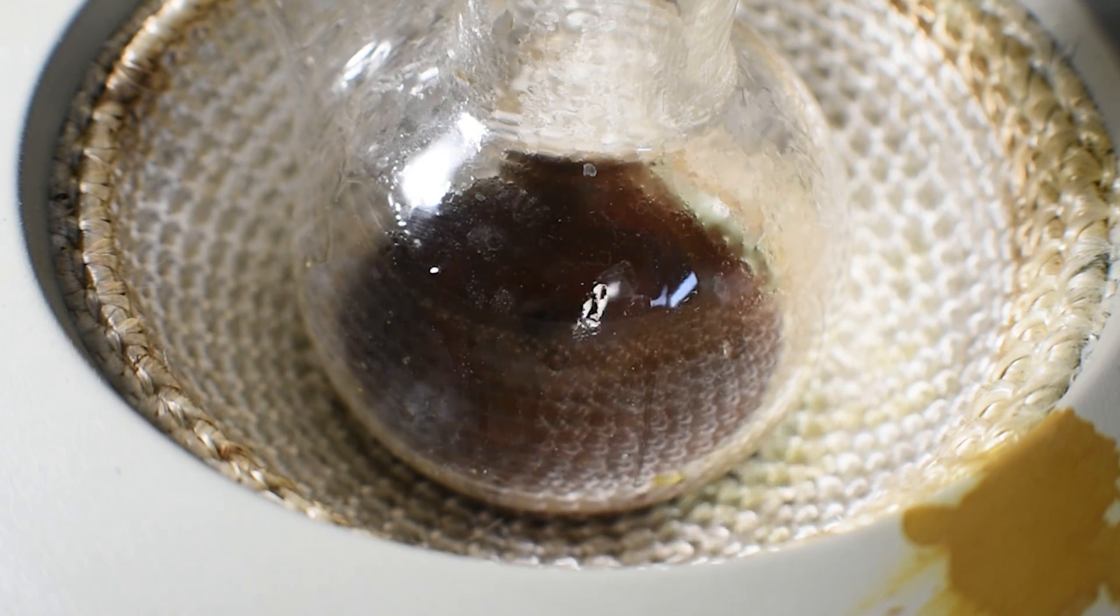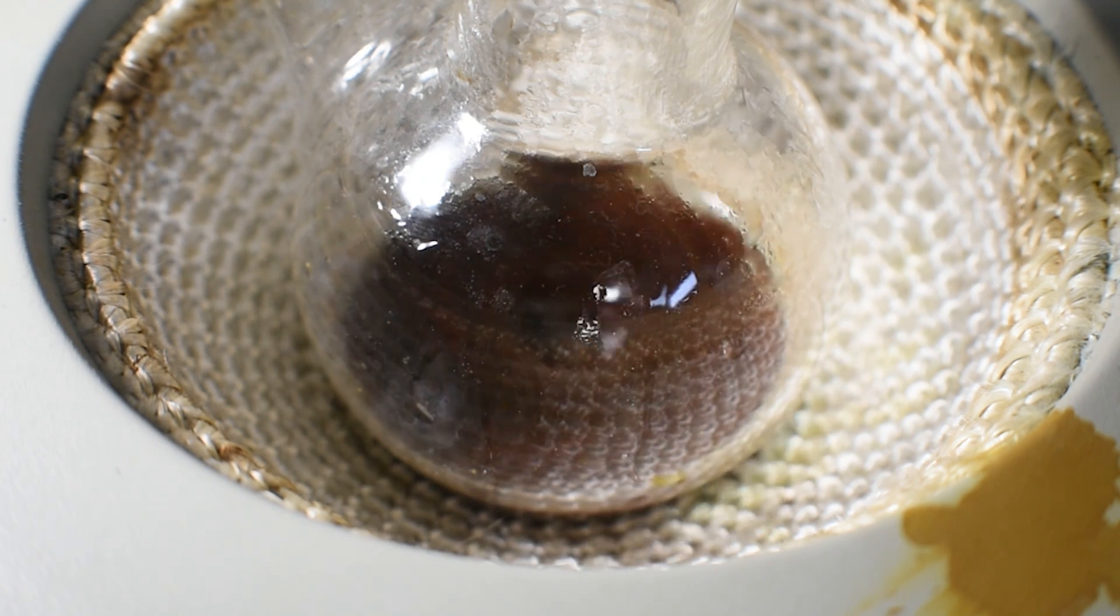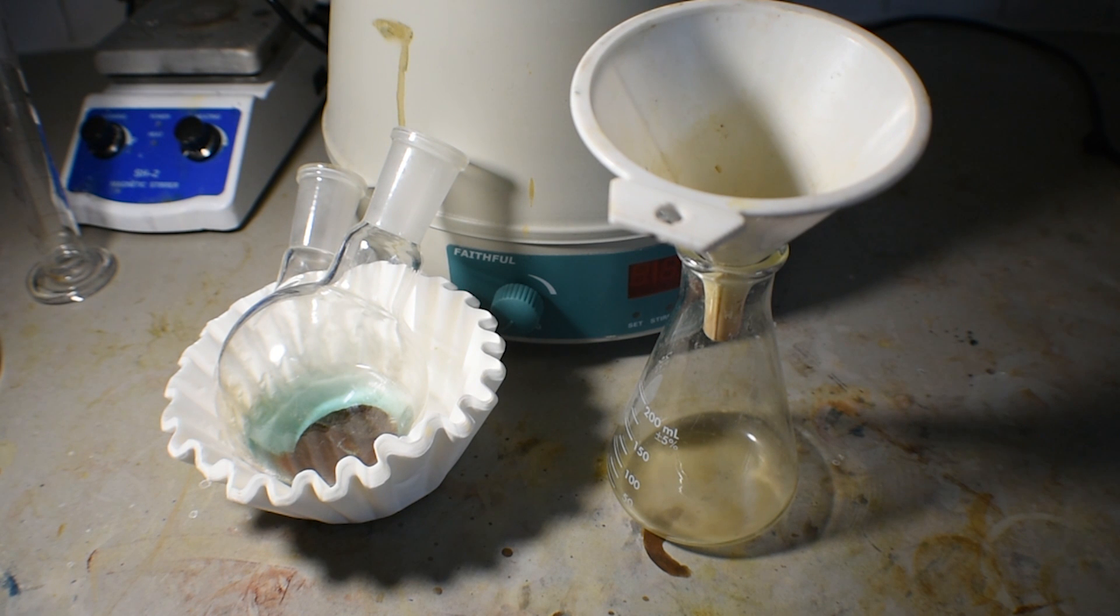Once the solution had become almost completely red in color, it was taken off heat and allowed to cool outside, so as to let any remaining sulfur dioxide escape the flask. After a few hours, it was ready to be processed through a simple gravity filtration setup comprised of a filter funnel and filter paper.